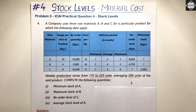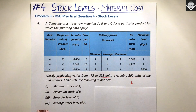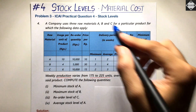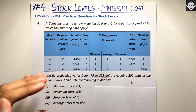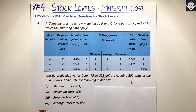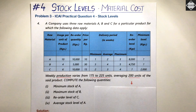Welcome back to Sahab Academy. In this fourth video of the stock level topic of the material costing chapter, we are going to solve a comprehensive problem of calculating stock levels. We have different raw materials to produce just one unit of finished good. Many details are available and some are missing, making it a special problem. This question is from the ICAI study material, practical question number four from the latest study module.